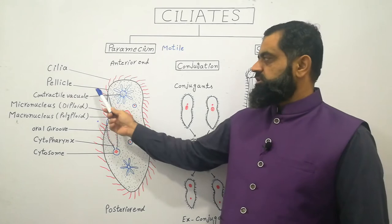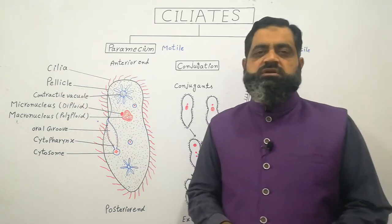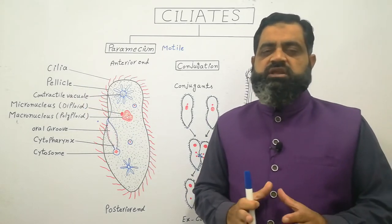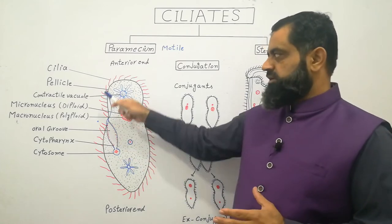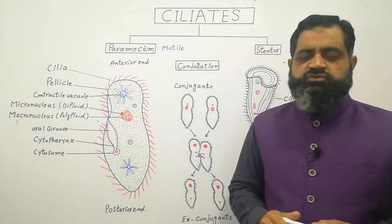The outer covering of the paramecium is known as pellicle, which is flexible but yet gives a definite shape to a paramecium and it is also protective.